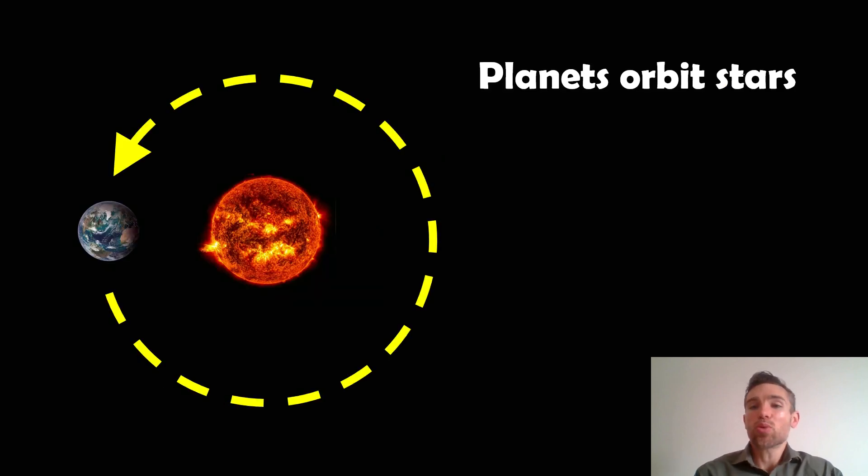Now before we get there, we probably need to define what a planet is. Planets generally orbit stars. The Earth orbits the Sun, that's fairly obvious, so does Jupiter and all the other planets we have. Planets don't always have to orbit stars though. If you've seen some of my other videos about free-floating planets, rogue planets, these are planets that don't have stars and they can form like that potentially or they can get thrown out of their system and they then have no stars. That's not always the case but generally let's just assume for this case here that planets orbit stars.